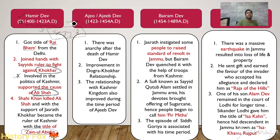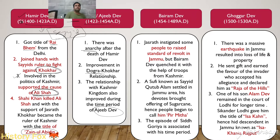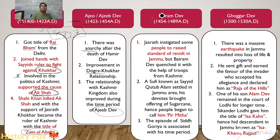Hamirdev was succeeded by Ajeeb Dev. There was anarchy after the death of Hamirdev, but there was an improvement in the Dogra-Khokar relationship, and relations with the Kashmir kingdom improved during the time period of Ajeeb Dev. Then after him came Bairam Dev. During Bairam Dev's time, Jasrat instigated the people of Jammu to raise a standard of revolt against the Dev dynasty, but Bairam Dev suppressed the revolt with the help of troops from Kashmir.